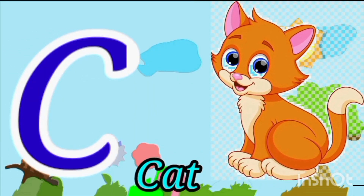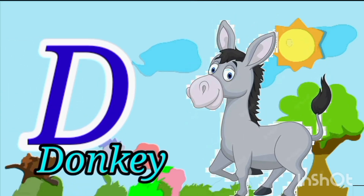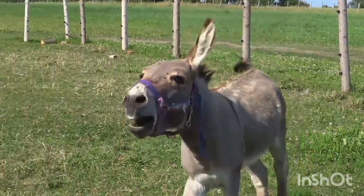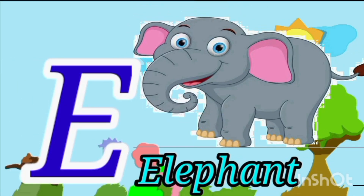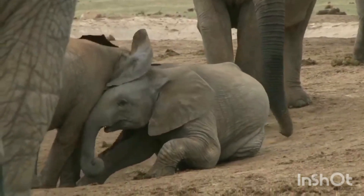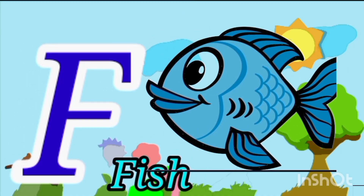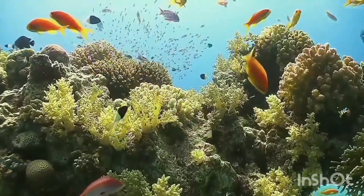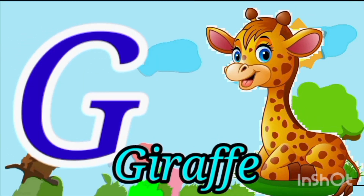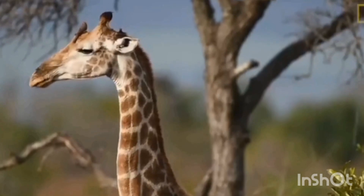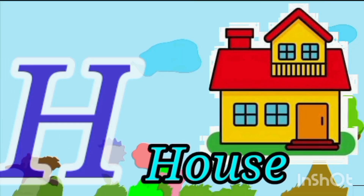C for cat. D for donkey. E for elephant. F for fish. G for giraffe. H for house.